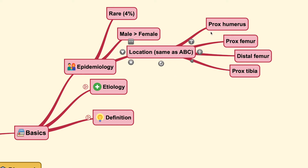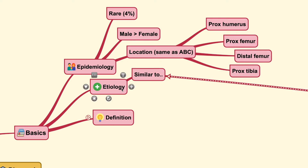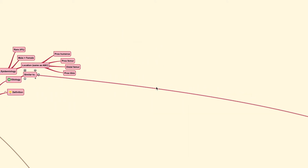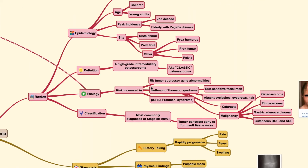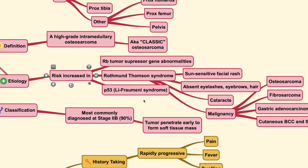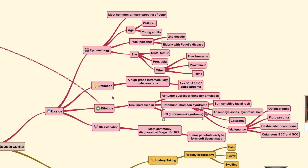The location of this type of tumor is generally found in the proximal humerus, proximal femur, distal femur, or proximal tibia. The etiological factors are very similar to classic osteosarcoma. The subtypes of patients with increased risk include those with retinoblastoma tumor suppressor gene abnormalities, Rothmund-Thomson syndrome, and those with P53 or Li-Fraumeni syndrome.